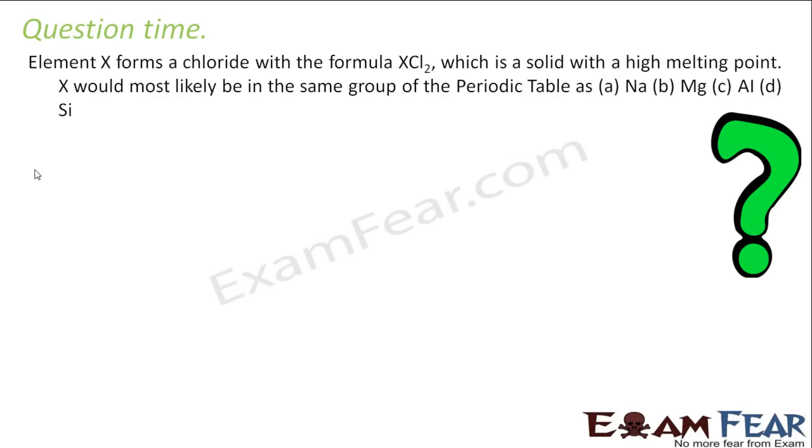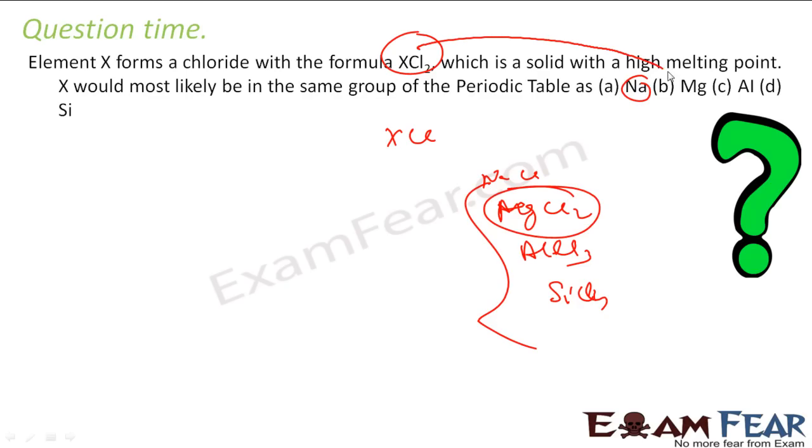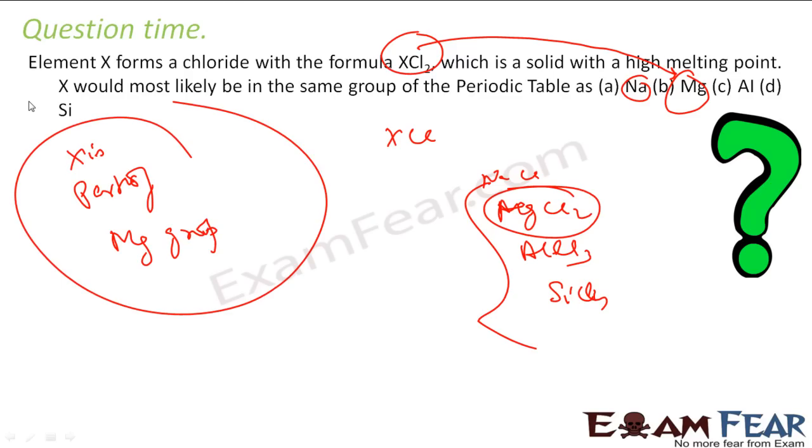Element X forms chloride with the formula XCl2, which is a solid with high melting point. X would most likely be in the same group as which element? Since X forms XCl2, if you see Na forms NaCl, Mg forms MgCl2, Al forms AlCl3, and Si forms SiCl4. With this, I can say that MgCl2 is almost similar to XCl2. So I can say that this X is part of Mg group. If I've got XCl2 and MgCl2, both the chloride formulas match.